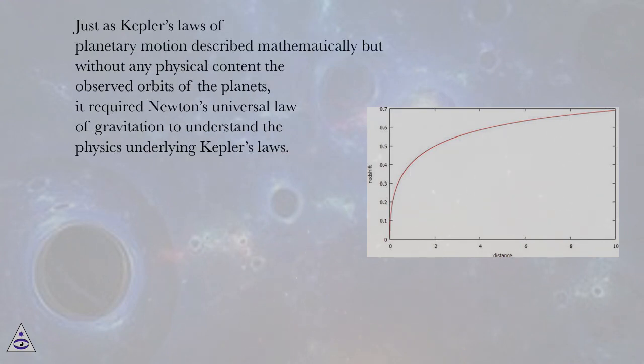Just as Kepler's laws of planetary motion described mathematically but without any physical content the observed orbits of the planets, it required Newton's universal law of gravitation to understand the physics underlying Kepler's laws.